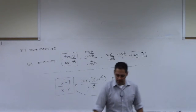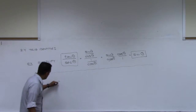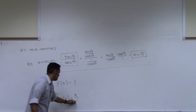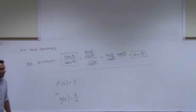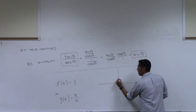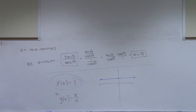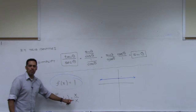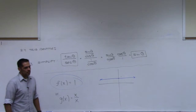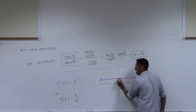Here's another example. Look at these two functions: f of x equals 1 versus g of x equals x over x. If I graph f, no matter what I plug in I get 1 — it's a horizontal line. What does g look like? Plug in 1: 1 over 1, you get 1. Plug in 2: 2 over 2, you get 1. Plug in any number and it gives you 1 — except 0. You can't plug 0 into that. So g looks like the same horizontal line, but it has a hole at 0.